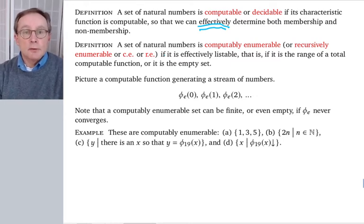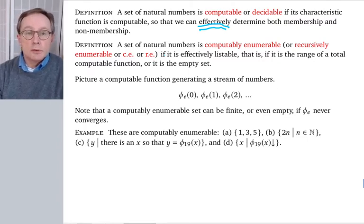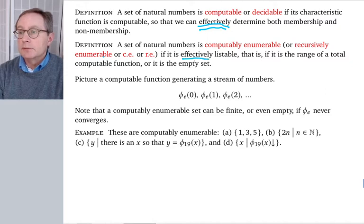In contrast, and we have the set capital K as a kind of prototypical example, a set of natural numbers is computably enumerable. You sometimes hear the words recursively enumerable, or sometimes the abbreviation CE or RE, if it is effectively listable. So, I'm going to emphasize the effectively part here. If it's effectively listable, you see the difference between determine and list.